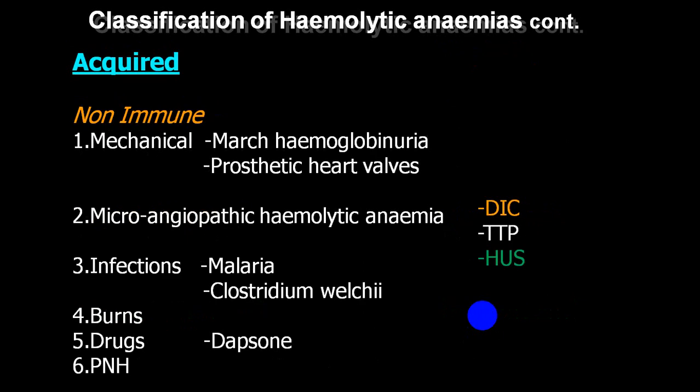Drug-induced hemolysis may be caused by drugs like quinine or methyldopa. In the non-immune variety, causes include march hemoglobinuria, prosthetic heart valve (mechanical/metallic), microangiopathic hemolytic anemia, infections like malaria or Clostridium welchii, extensive burns, certain drugs, and PNH. Hemoglobinuria is also seen in hemolytic uremic syndrome, thrombotic thrombocytopenic purpura, or DIC.